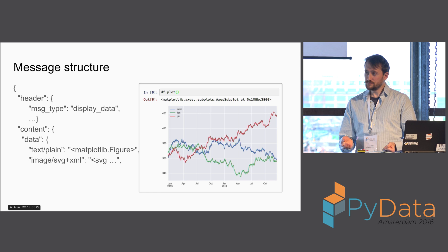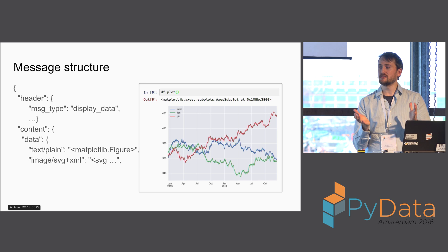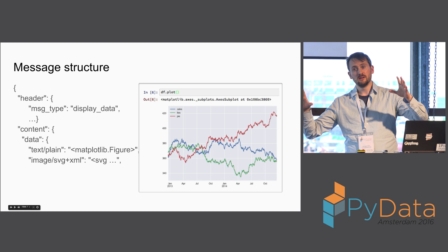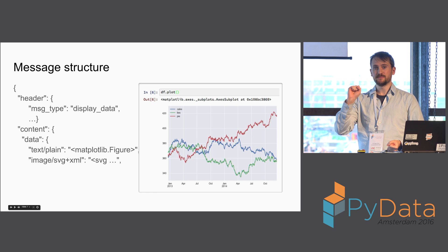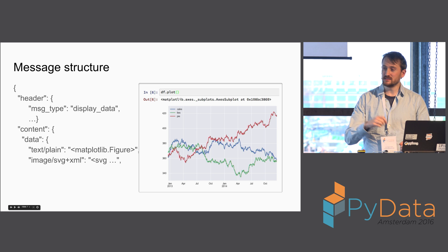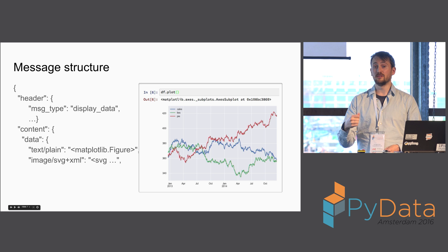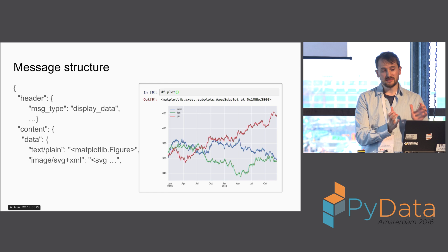One of the common ones is a display_data message. Display data is the rich message we use for: 'I've got something that I want you to show.' In addition to the plain text you'd get in a terminal, this object actually has multiple representations. I know the simple text representation — in Python we just call repr. But in this case, it's also got an SVG representation, or a LaTeX representation, or a PNG representation. It sends those as what we call a MIME bundle.